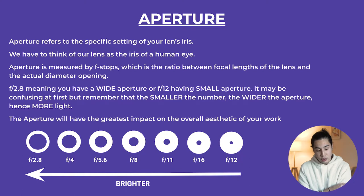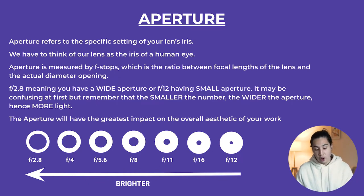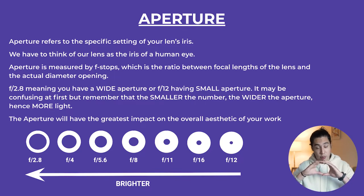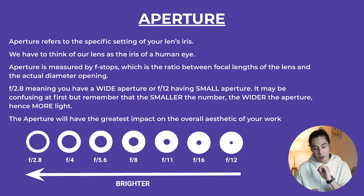When I first learned about aperture, I was very confused, but looking back it's quite simple. Just remember: the smaller the number, the wider the aperture, hence more light. So if you have an aperture of 2.8, your iris is open as wide as possible, letting in as much light as possible. If you're at f12, it's really small and you're letting in less light.